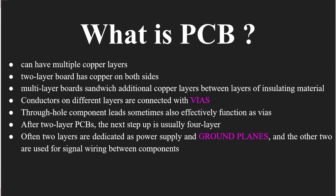Through-hole technology is used for through-hole components, whose leads sometimes also effectively function as vias. After the two-layer PCB, the next step is the four-layer PCB — there is no three-layer PCB. Often, two layers are dedicated as power supply and ground planes, and the other two are used for signal wiring between components.